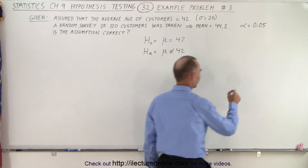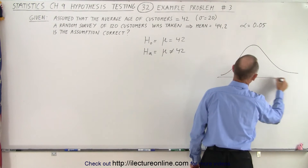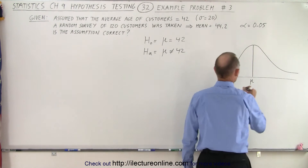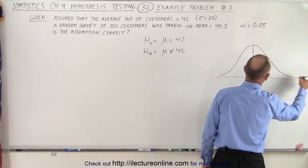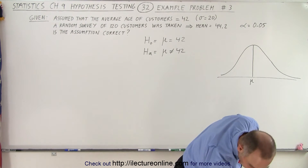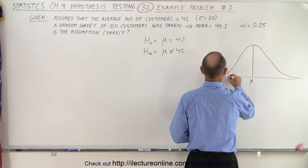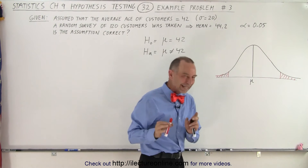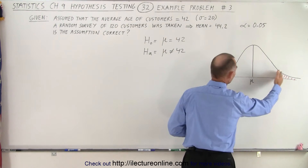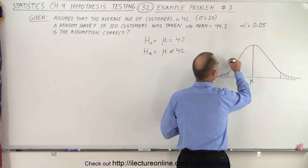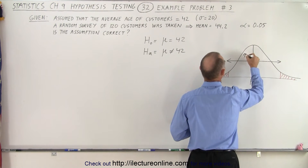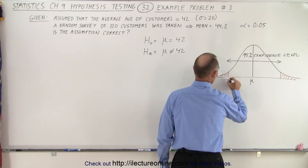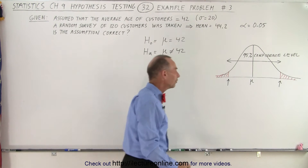When we graph this out, we're going to have a distribution with the population mean. We're going to have a critical region on the lower side and a critical region on the upper side. We calculate a test statistic to see if it falls in the non-critical region or the critical region, with a 95% confidence level.